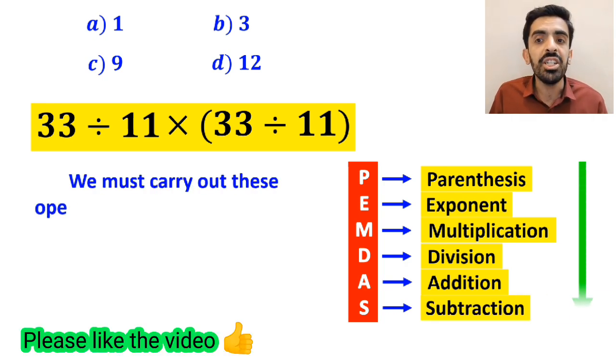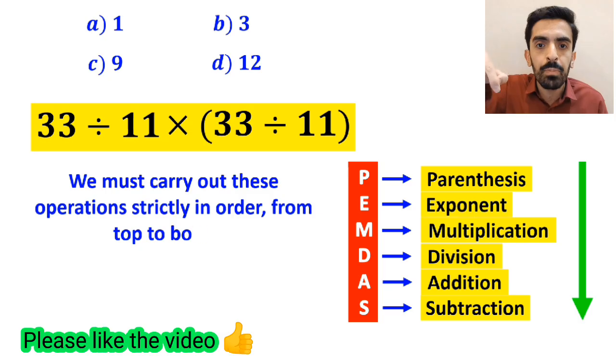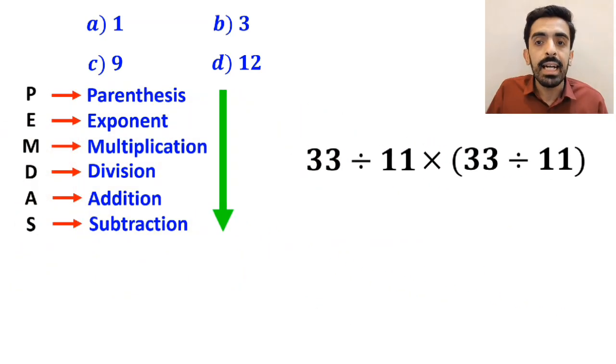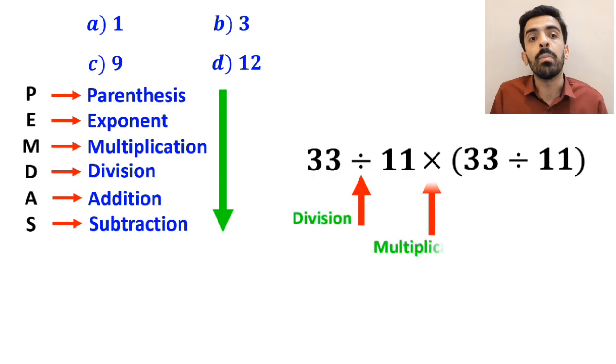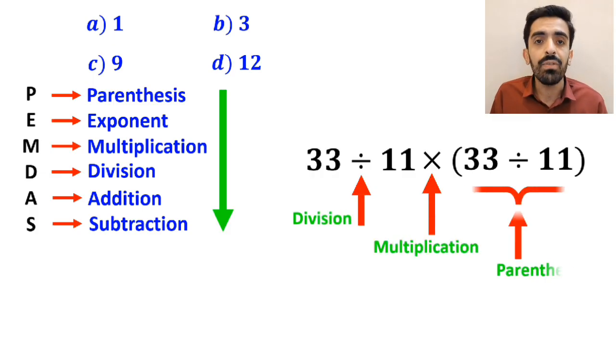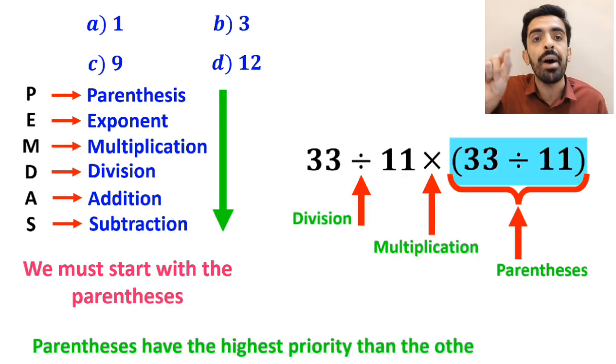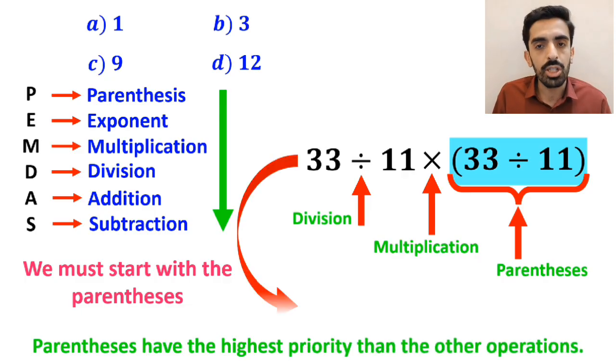We must carry out these operations strictly in order from top to bottom. As you can see on the screen, in this expression, first we have a division sign, then a multiplication sign, and finally parenthesis. According to the PEMDAS rule, we must start with the parenthesis, because parenthesis have the highest priority compared to the other operations. So we can rewrite this expression as 33 divided by 11 times 3.